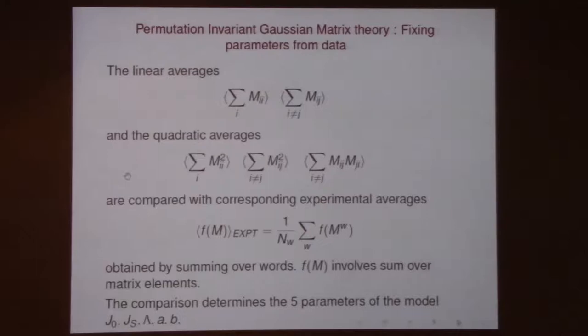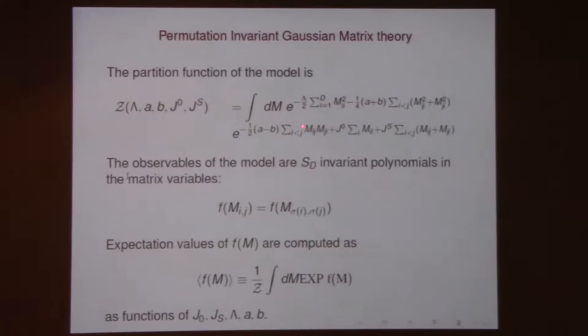We have these linear averages, these quadratic averages — experimental stuff. Once you know them from experiment, you can go back and fix the parameters of the model. A Gaussian is determined by the mean and the dispersion. Here we have two permutation-invariant means and three dispersions. So once you know these dispersions from the data, you can fix what these five parameters are.